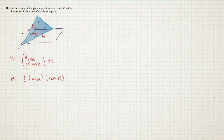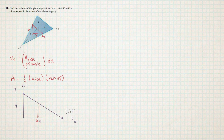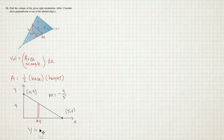Let me look at what's going on in just the XY plane, which will let me figure out a formula for the base B in terms of X. Here's the X axis and here's the Y axis. According to the diagram, this distance is 5 and that distance is 4, so we have the point (5, 0) and the point (0, 4). This line has a negative slope — the rise over the run gives a slope of negative four fifths — and I can read the Y intercept as 4. So the equation of this line is Y = negative four fifths X plus 4.